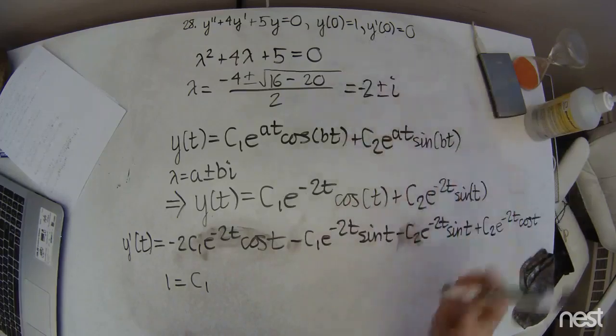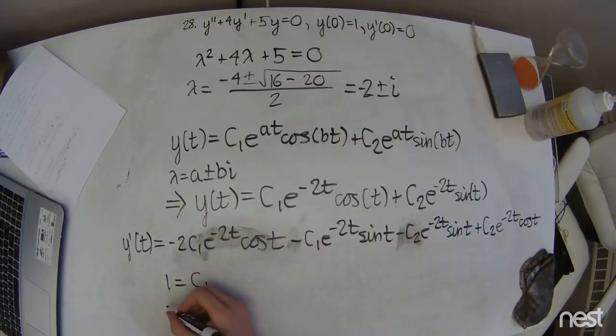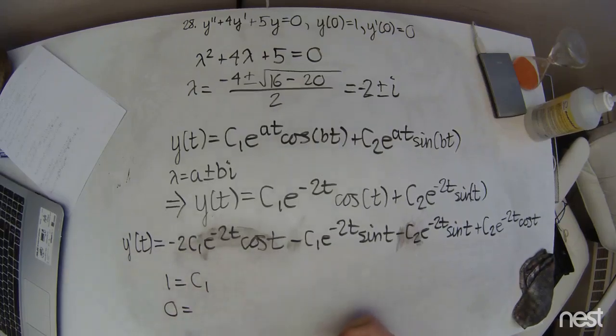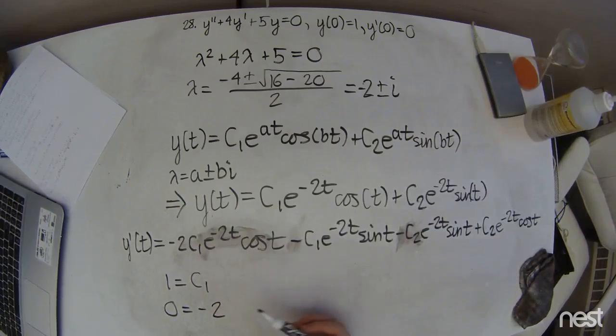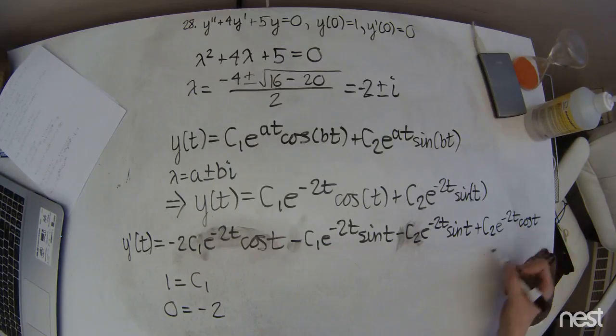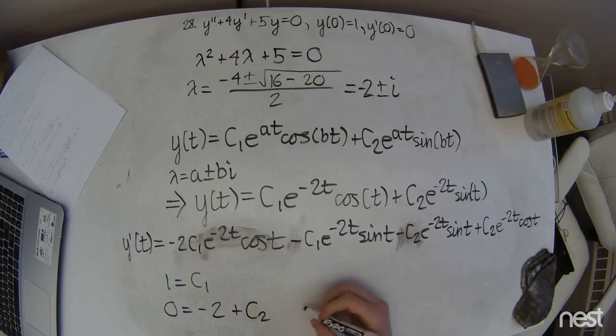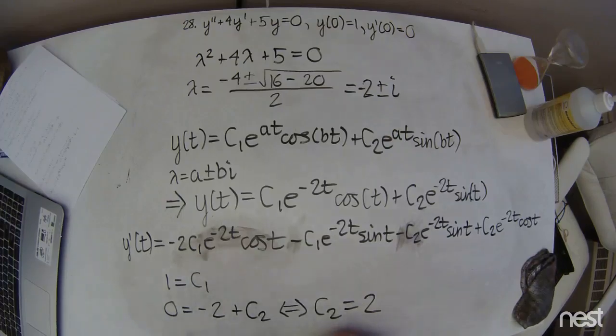So now let's plug in the initial conditions for y prime. So we're going to get 0 equals, now again the exponentials are just going to turn into 1 because they're going to be raised to a power of 0. So we're just going to have negative 2c1 since cosine of 0 is 1. This will cancel out. This one will also cancel out. So plus c2, and then c2 equals 2. Alright, that's nice and easy. I forgot to write the c1, sorry. But it plugs in that way and ends up being the same thing.